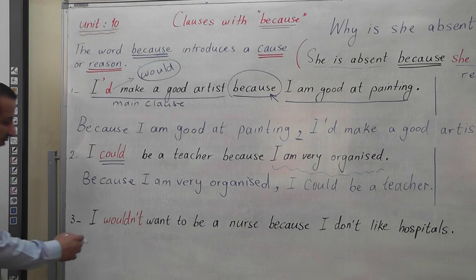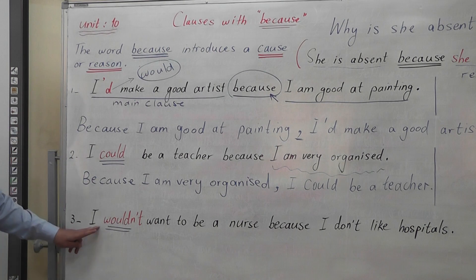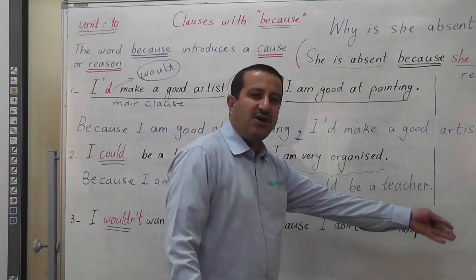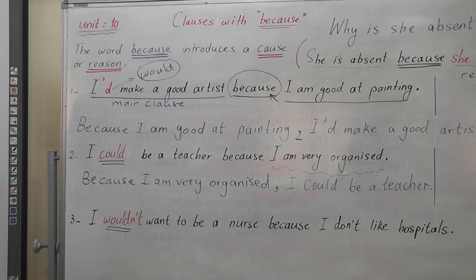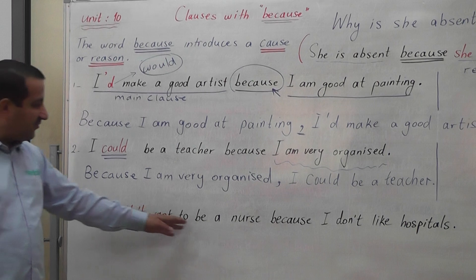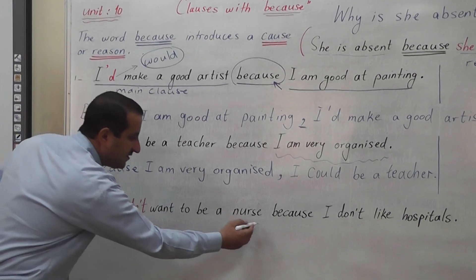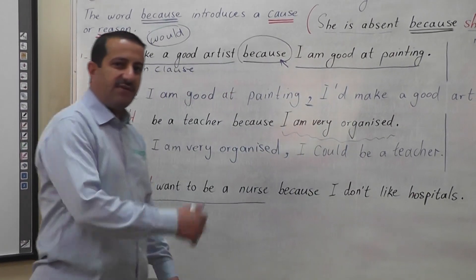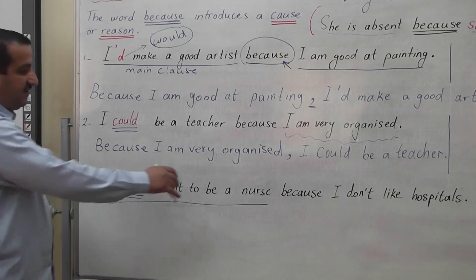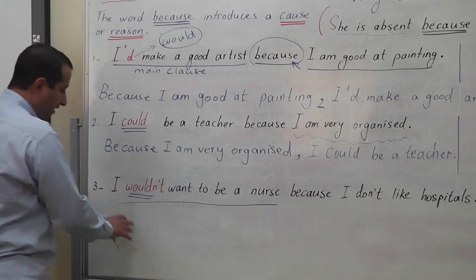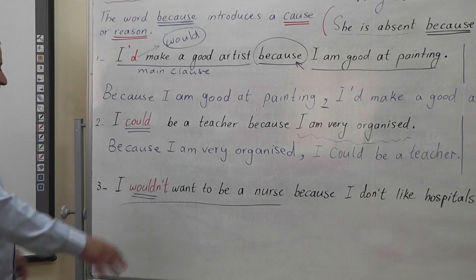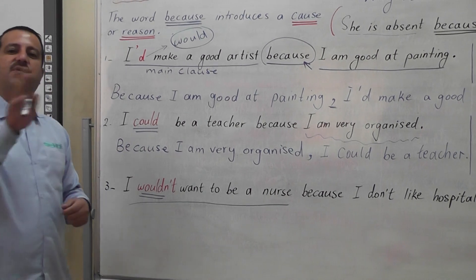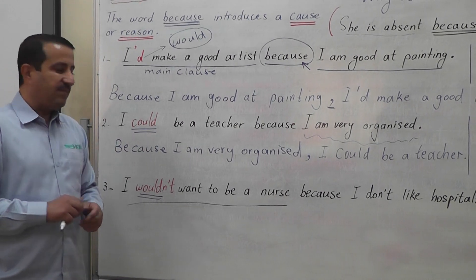In the third example, we use WOULD: 'I wouldn't want to be a nurse because I do not like hospitals.' The main clause is 'I wouldn't want to be a nurse,' and 'I don't like hospitals' is the second independent clause. We can also start with BECAUSE: 'Because I don't like hospitals, I wouldn't want to be a nurse.' We must use a comma because we start with BECAUSE.